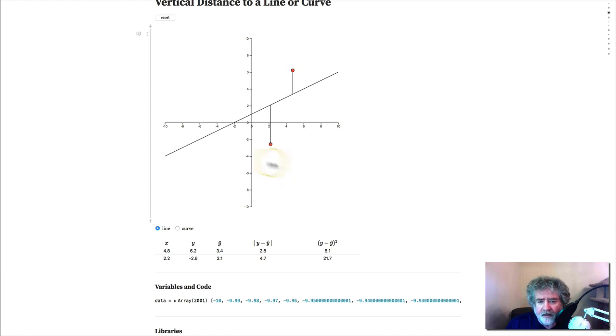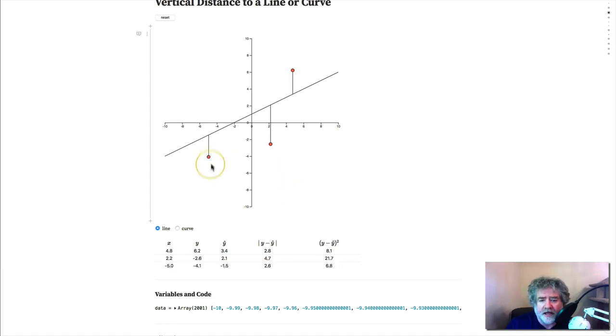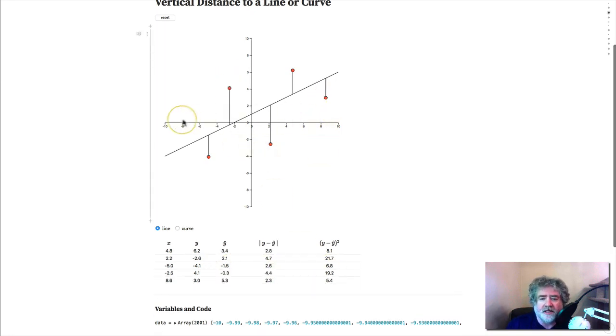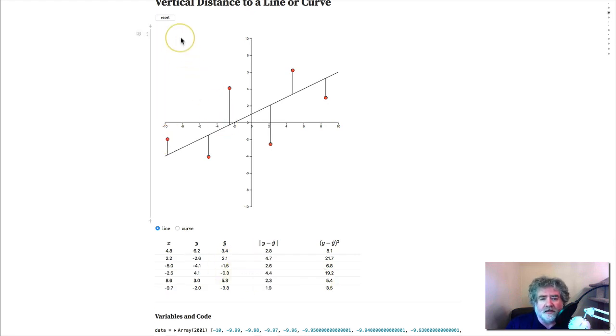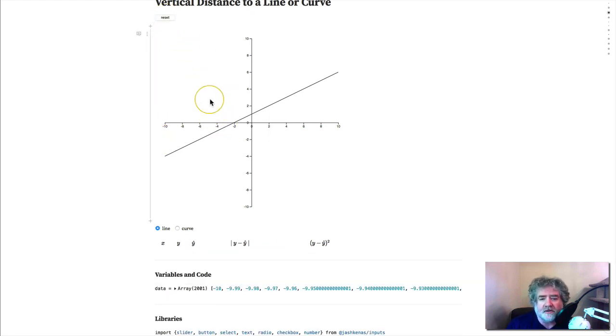So with this you can add a point, and you can look at what's the x and the y, where's the line, what's the difference, what's the square difference, and you can do that for up to 10 points. You can reset it, if you like, and start over.